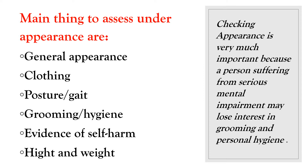Under appearance, write about general appearance — how the patient looks. Clothing — what type they are wearing. Posture and gait — whether steady or imbalanced. Grooming and personal hygiene — neat and clean, or careless and dirty. Evidence of self-harm — any cuts or wounds in visible areas of the body. Also note height and weight.